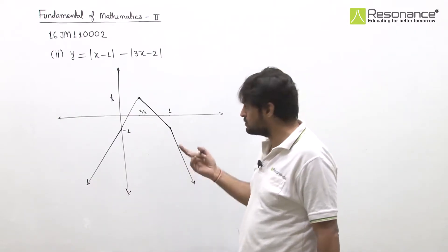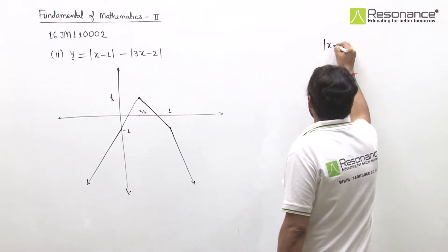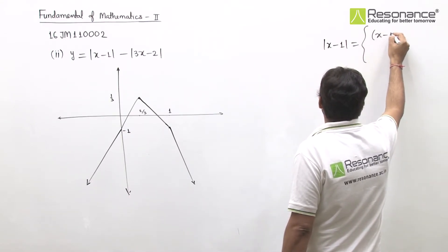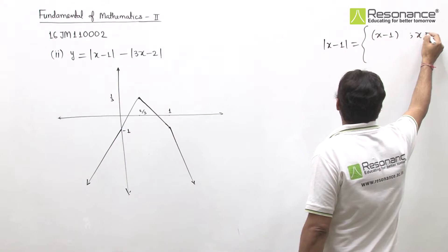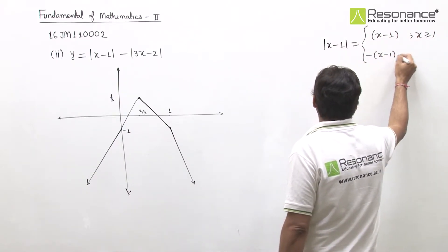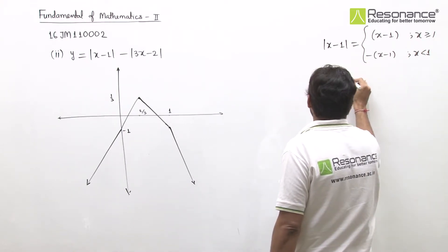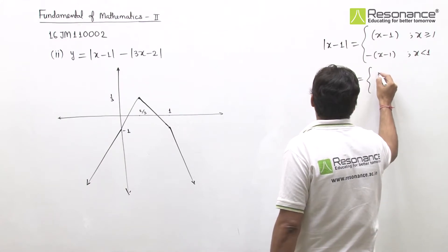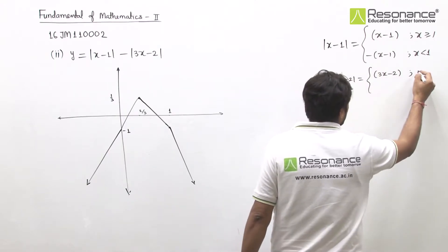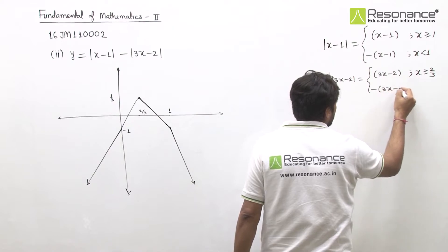The graph is ready; now we also define it. We observe that mod of x minus 1 has its changing point at 1 — so for x greater than 1 it opens with plus, and for x less than 1 with minus. Similarly, mod of 3x minus 2 has changing point at 2/3 — for x greater than 2/3 it opens with plus, and for x less than 2/3 with minus.